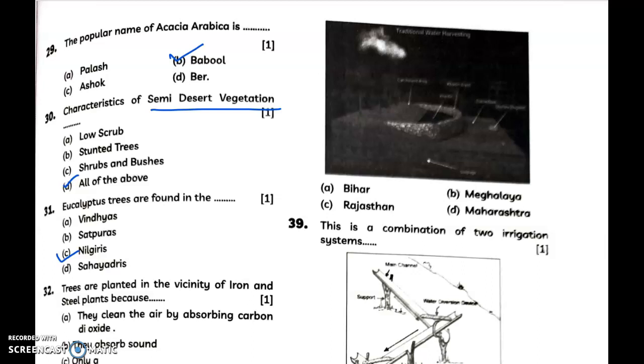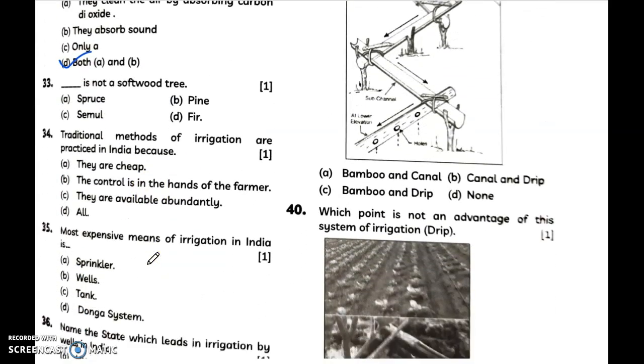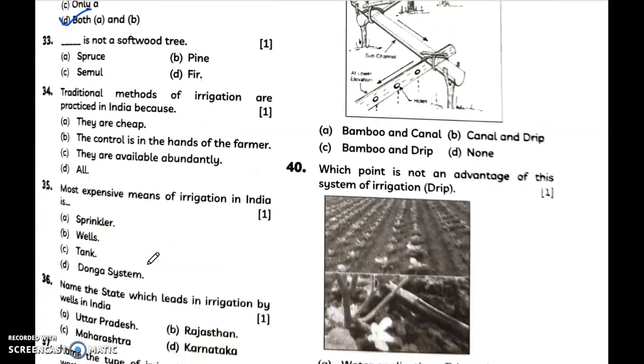Now trees are planted in the vicinity of iron and steel plants because... answer is option D. Dash is not a softwood tree - answer is C, semul.